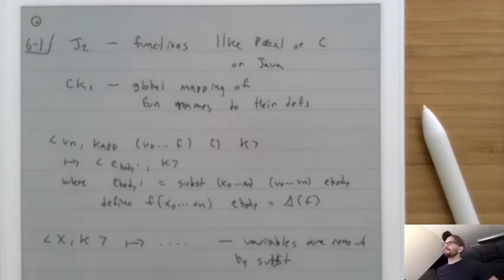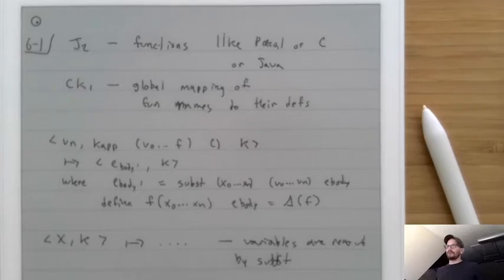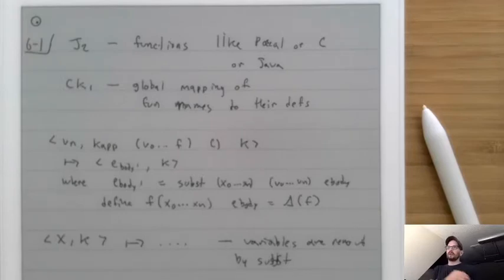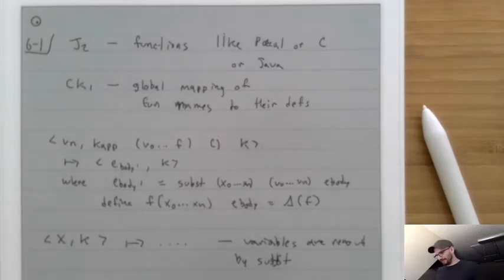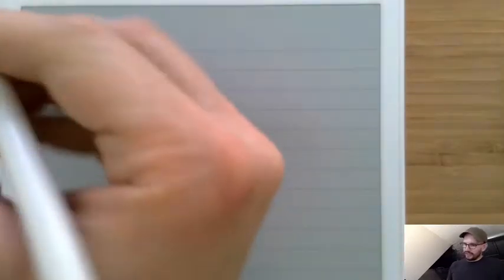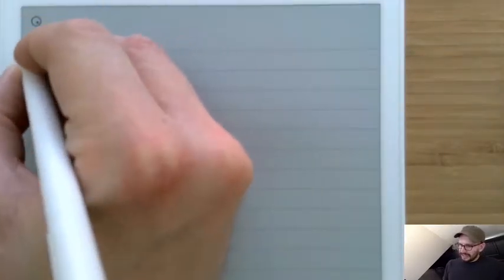This is unfortunate because it means we're now inefficient. We have to change this because one of our principles for designing machines is that we always want constant steps. There's no little tweak we can do — we have to have a new kind of machine. This new kind of machine is called the CEK machine.